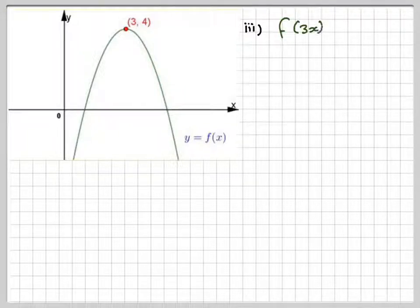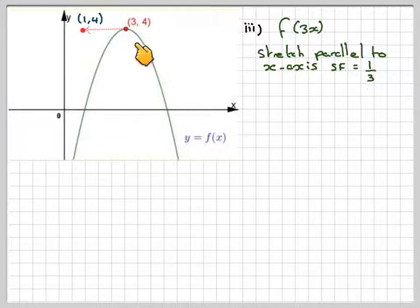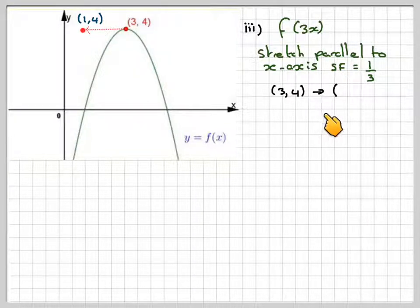Part 3: f of 3x. This is a stretch parallel to the x-axis, but the scale factor is not 3, it is 1 over 3. And therefore, this point here will now go to (1, 4). So one third of 3 is 1, so (3, 4) will map onto (1, 4).